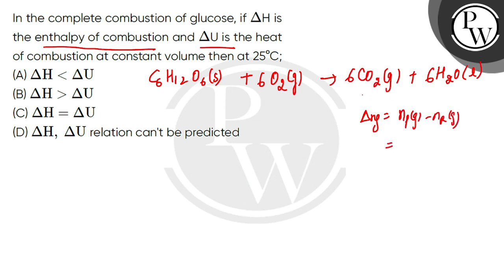Np gas is the product side moles: 6. And the reactant side gaseous moles: again 6. So 6 minus 6 is 0. And what is delta H and delta U relationship? This is delta H equals delta U plus delta NG RT. Now since delta NG value is 0,